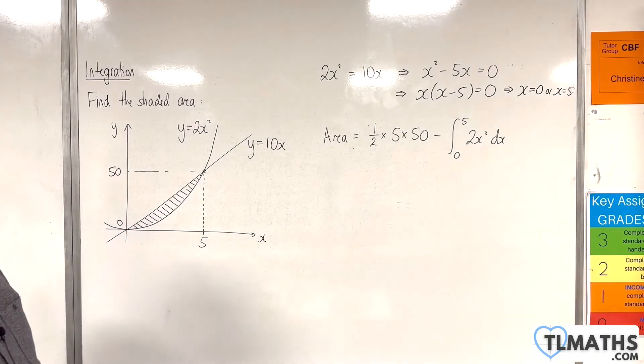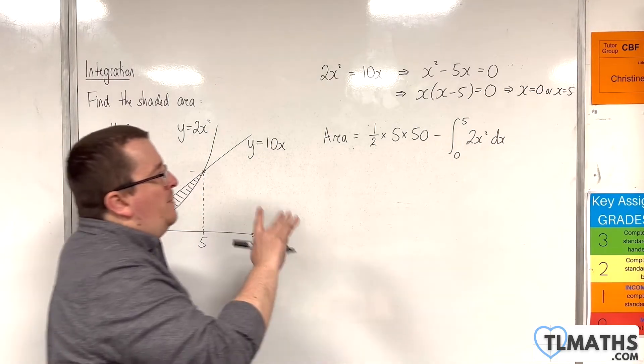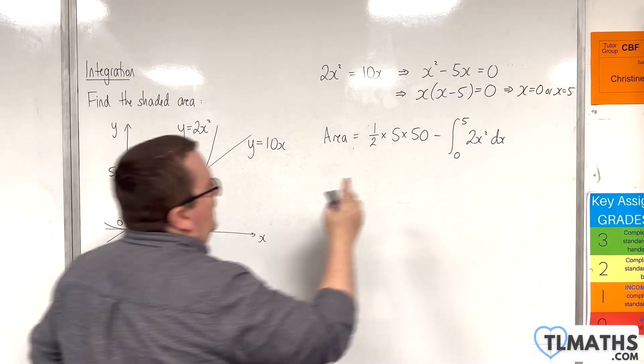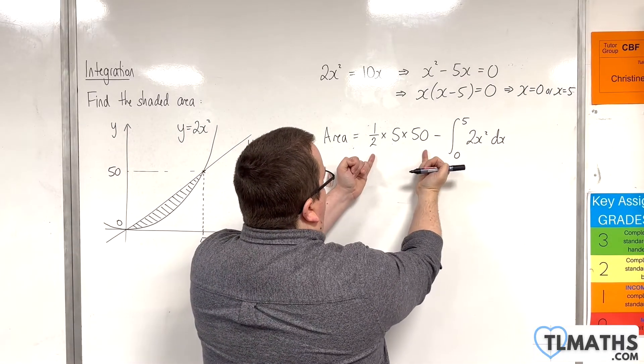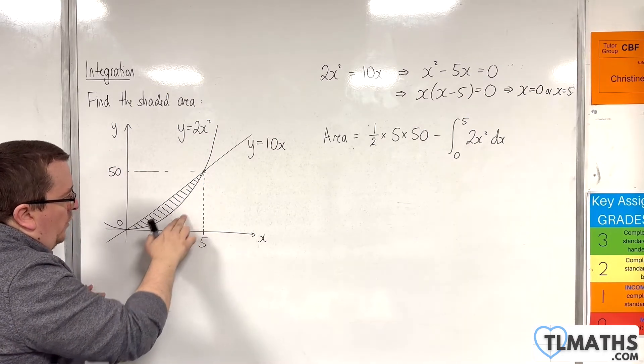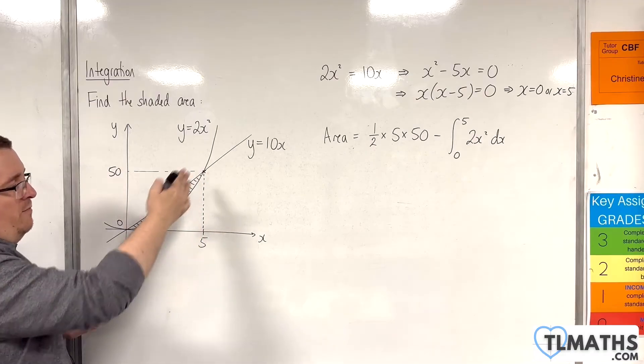So that will leave me the shaded area that I want. So if you're a little bit puzzled as to why we're taking it away, just recognise that that is the area of the triangle. This is the area underneath the curve. So all that area there, which I'm going to take away from the area of the triangle.